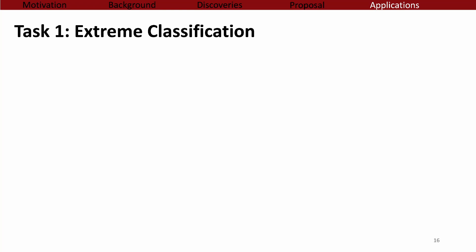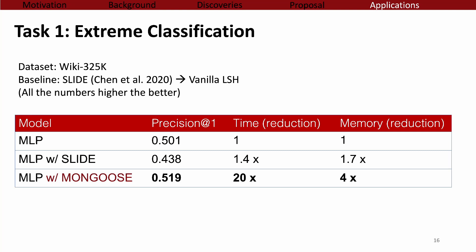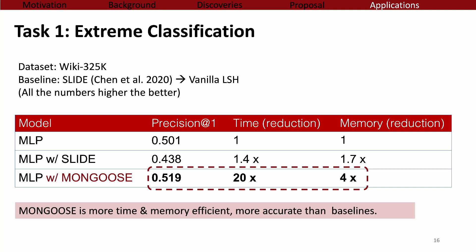The first task is extreme classification on the Wiki-325K dataset, where there are 325K classes. The base model is wide MLP layers. From the result table, Mongoose gets 20 times speedup and 4 times memory reduction while maintaining the same or even better precision@1 compared to the naive MLP model. Compared with SLIDE, which uses vanilla LSH, we use 2 times less memory and achieve 14 times speedup while achieving more than 7 points better accuracy.